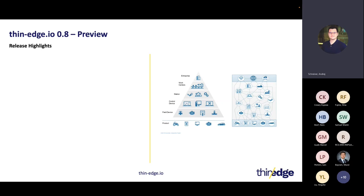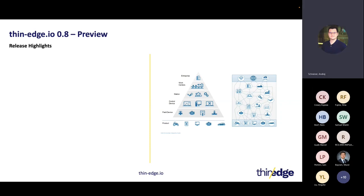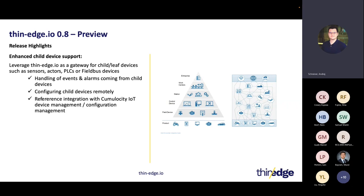In previous releases, we already implemented basic support for exchanging measurements and telemetry from child devices and pushing them up to the IoT platform. Now we continue to focus on that and offer more functionalities around child devices. One important aspect is the handling of events and alarms — if you have a PLC or machine component connected to Thin Edge that can generate alarms, those can be sent directly to your preferred cloud or IoT platform. You can also do data preprocessing of a sensor value on Thin Edge itself, generate an alarm, and assign that alarm to the specific child device. It all works by picking the right MQTT topic and payload format.